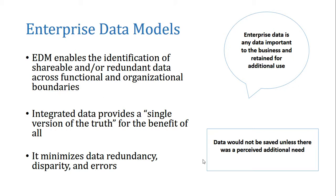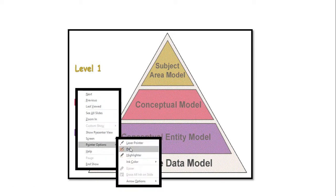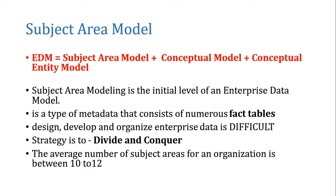Enterprise data models consist of multiple levels. The first level is known as a subject area model, the second level is a conceptual model, and the third level is a conceptual entity model. A complete enterprise data model is a combination of all three — the subject area model, the conceptual model, and the conceptual entity model. Let's look into each of these levels in detail.